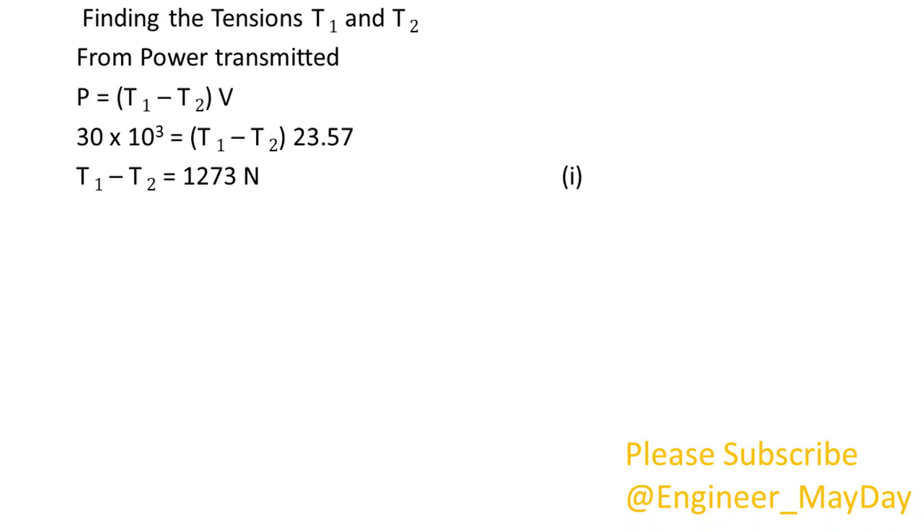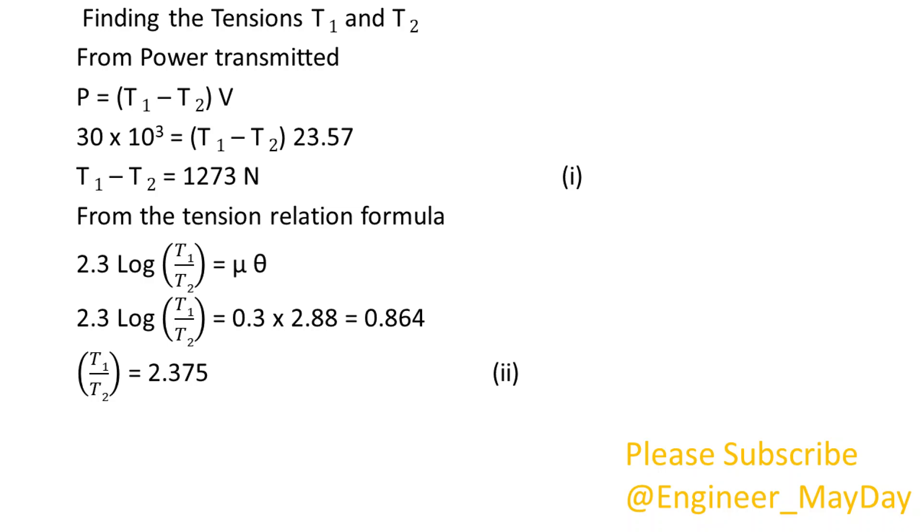Finding the tensions T1 and T2 from power transmitted, T1 minus T2 equals 1273 newtons. From the tension relation formula, T1 over T2 equals 2.375.